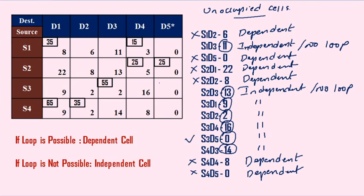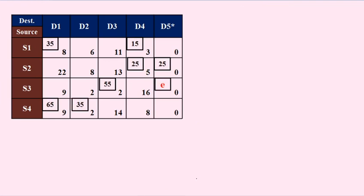So I am introducing one new letter — E, that is Epsilon, or Dummy. What is Epsilon? Epsilon is not a number, it is not a zero, but we can treat it as zero for calculation purposes.